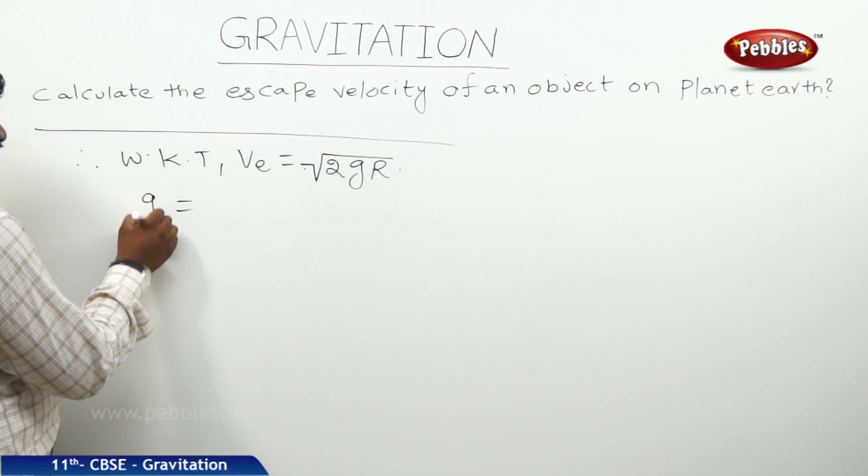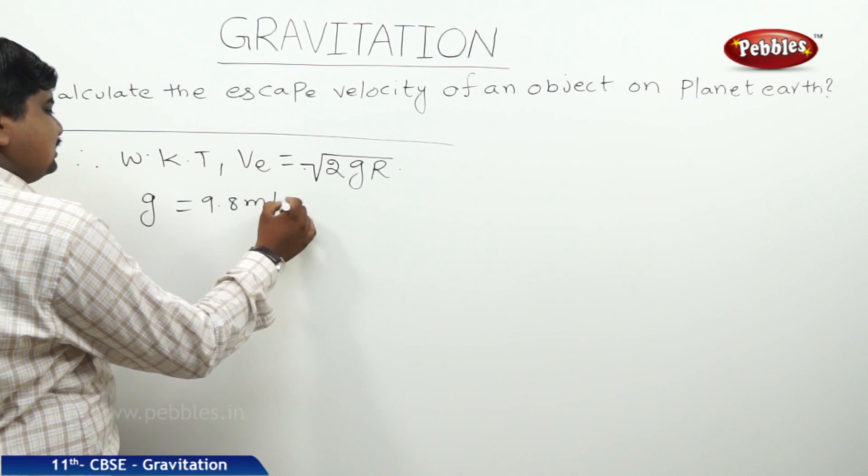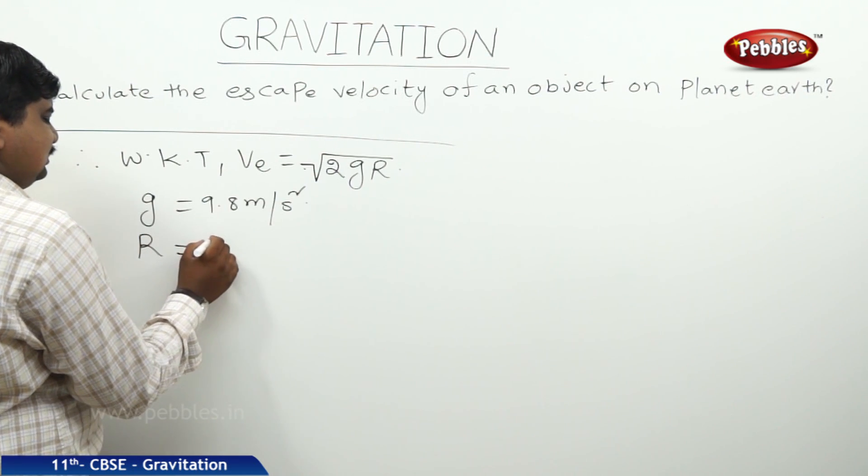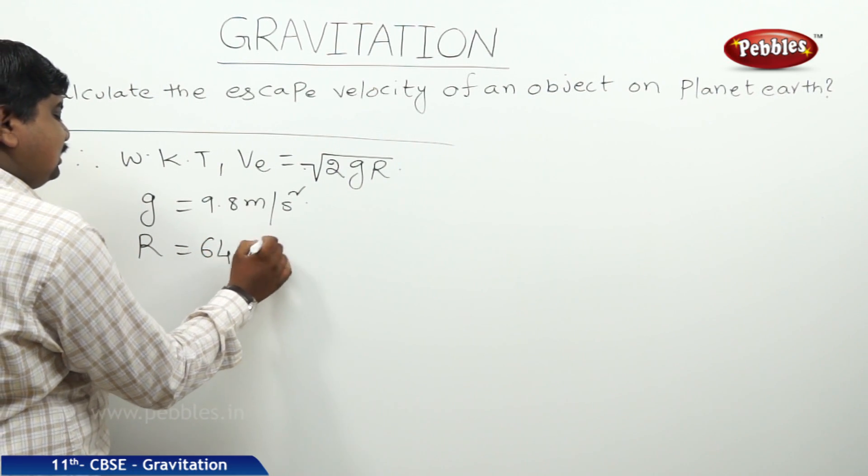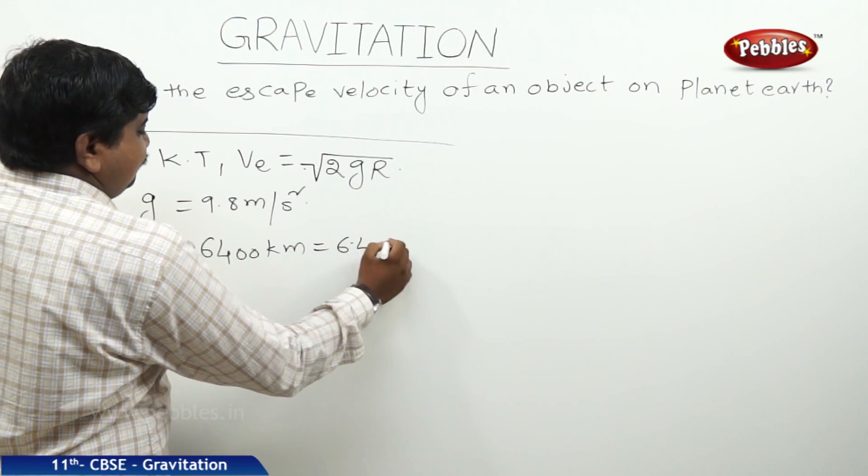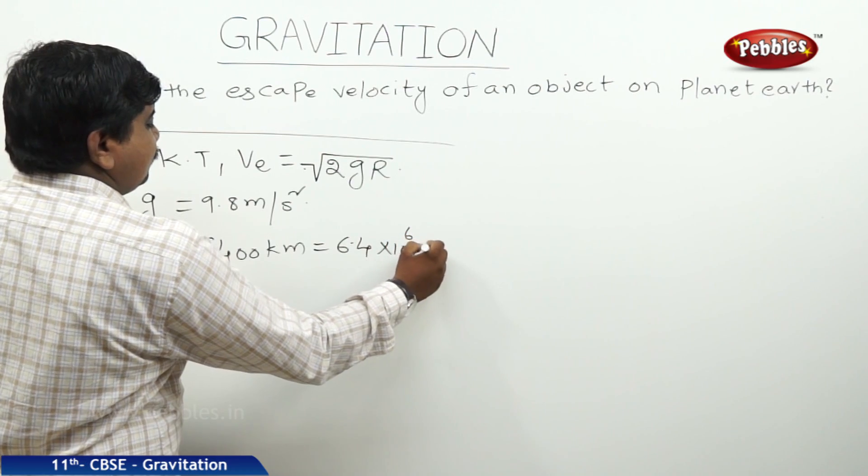We will take G is equal to 9.8 meters per second square. R is equal to radius of earth that is 6400 kilometers. So, we can write it as 6.4 into 10 to the power of 6 meters.